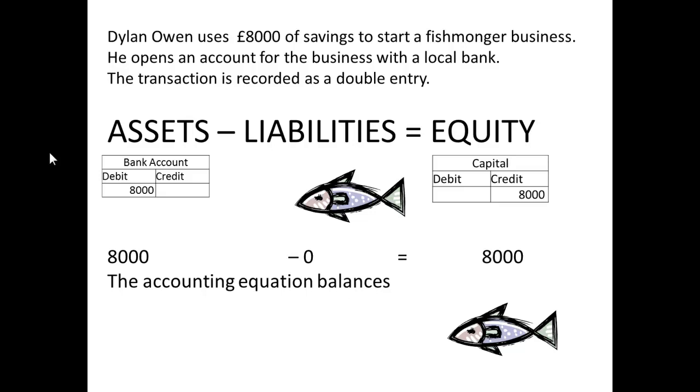Our accounting equation is £8,000 minus £0 equals £8,000 — in other words, it balances.